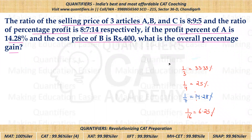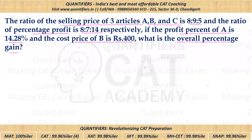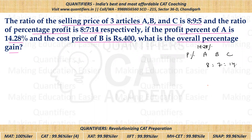Let me erase this. So first, let us use the information about the ratio of profit percentages of A, B, and C. The profit percentage of A is 14.28%, which is 1/7 in fraction form. The ratio of profit percentages is 8 : 7 : 40. Since 8 parts equals 1/7, that means one part equals 1/56, so the profit percentage of C (40 parts) equals 40/56, i.e., 5/7, and 8 parts equal 1/7.